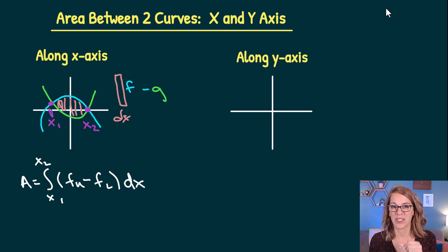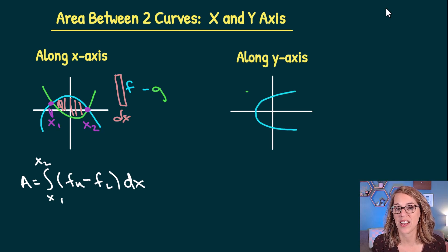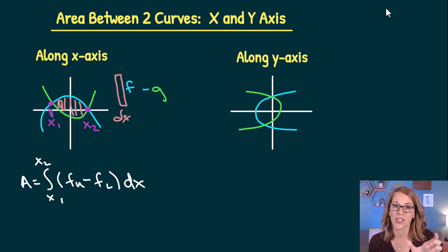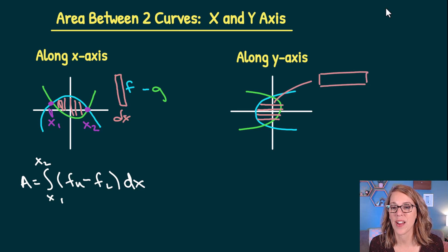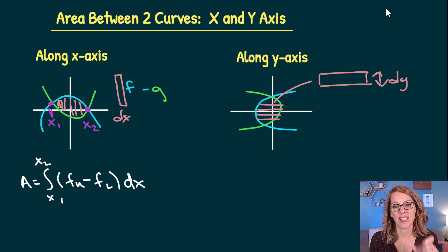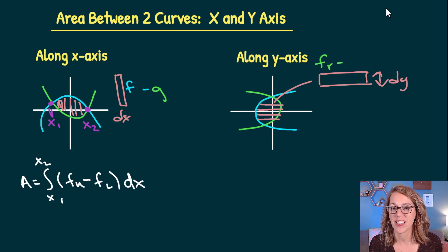If instead I was integrating with respect to the y-axis, we would have one parabola that opens to the right and another that opens to the left. As I draw rectangles whose length matches the distance between my two curves, the rectangles are oriented in the other direction. Taking a closer look, the rectangle has width in the y direction — that's a dy — and the length is the distance between the two curves: the rightmost curve minus the leftmost curve.